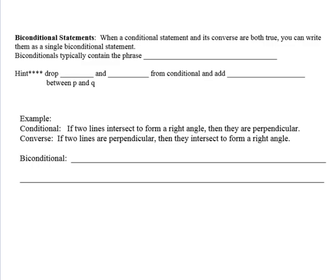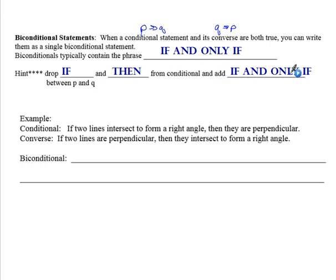Biconditional statements. Biconditional statements are when a conditional statement and its converse, so converse is when we switch, so this and this are both true. If both of these statements end up being true, then we can write what's called a biconditional statement. Biconditional statements typically include the phrase if and only if. So the hint to write a good biconditional is if we have an if P then Q statement, drop the if and then from the conditional and add if and only if between P and Q.